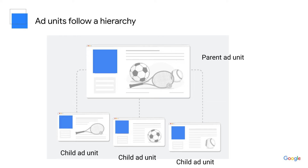When the publisher targets these ad units with advertisements, they can target the parent level and have the ad show on the parent level — this would be the homepage — as well as all lower-level child ad units on the tennis, soccer and baseball pages. Or, they can choose to only show the ad on a specific lower-level child ad unit, like the tennis, soccer or baseball specific pages.